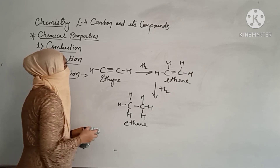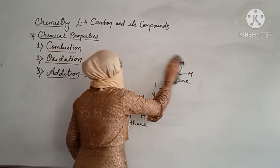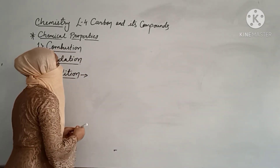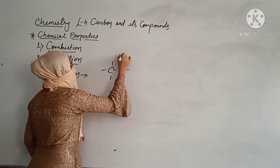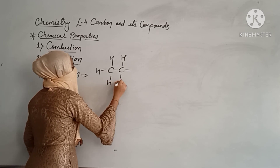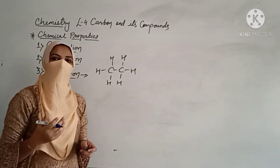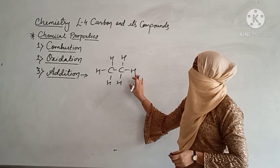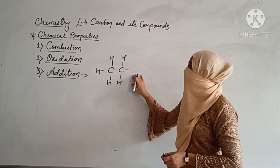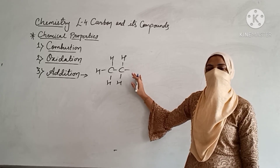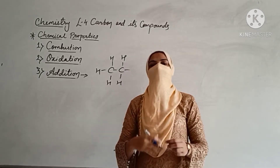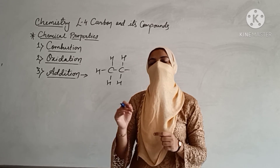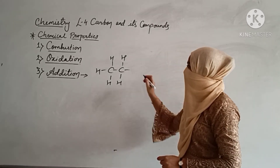Now, if we talk about saturated compounds, addition reactions are not possible. So if I have a saturated compound and want to make some changes, addition is not an option. Instead, I can remove one hydrogen and substitute something else in its place. This is called substitution reaction. Substitution means: at the place of a particular hydrogen, you remove the hydrogen and put something else — whatever you want — in its place.